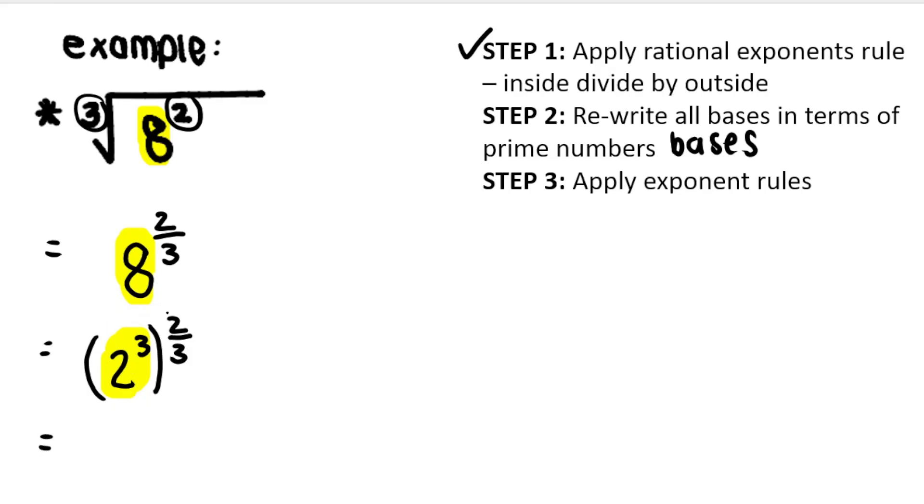And then you apply exponent rules. So power inside multiplied by power outside. Essentially these three, these threes cancel because it's three times two over three. It's basically these cancel leaving you with two. Or if you want to think of it like this, it's three over one times two over three.